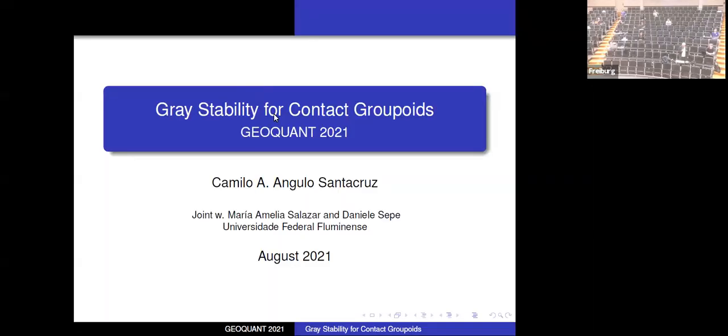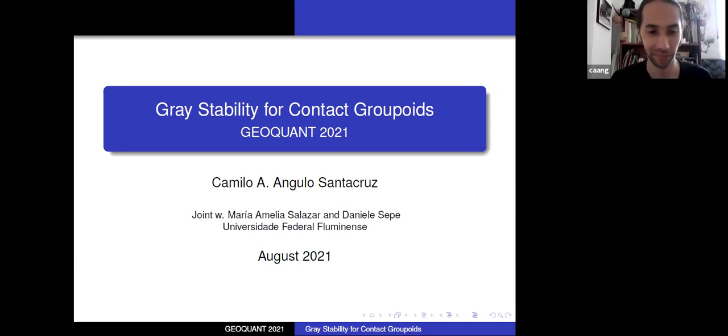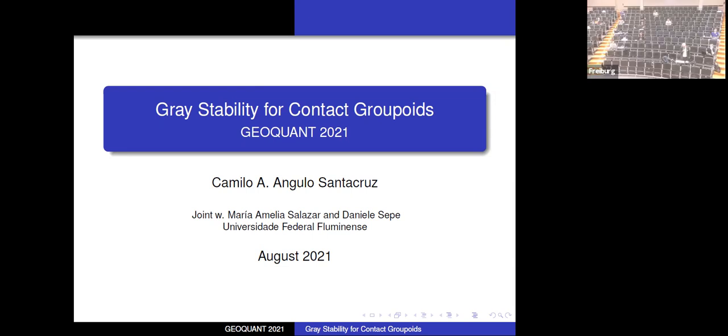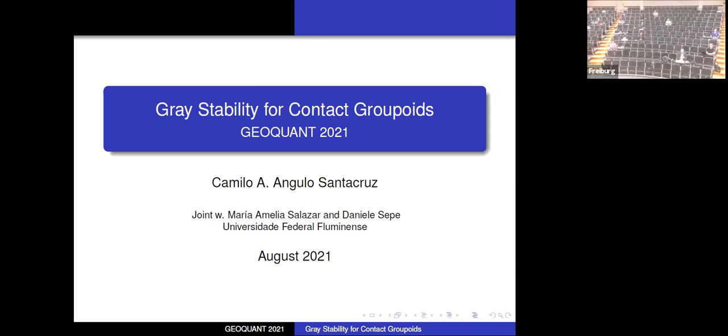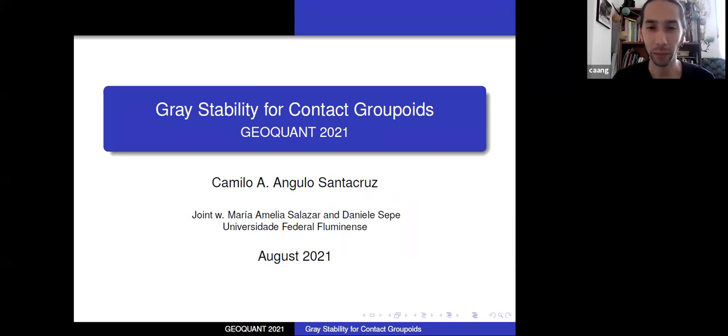Let's come to the last talk of today's session, Camilo Anguero of the University of Fluminense in Brazil, and he will be talking about gray stability for contact groupoids. Thank you. Can you hear me well? Yes. Okay, so first of all, I want to thank the organizers, not only for giving me the opportunity to speak here today, but also for what has turned out to be a lovely school and conference so far, and in spite of the obvious. What I want to share today are the main ideas of this ongoing project with Maria Amelia Salazar and Daniela Sepe, who are based at the University Federal Fluminense, though presently at home.